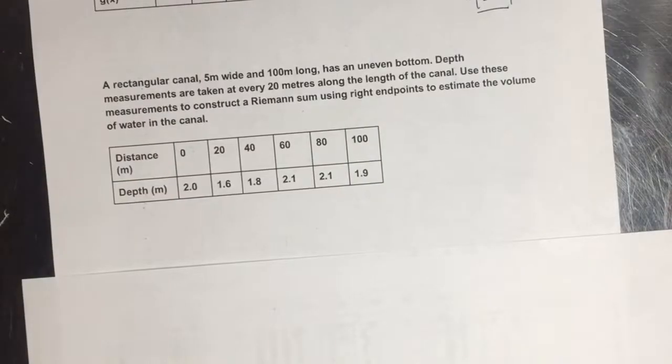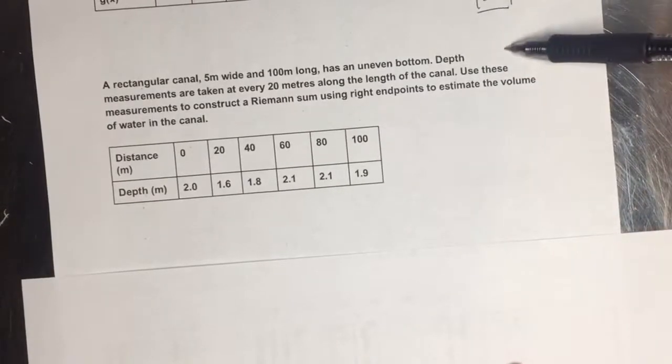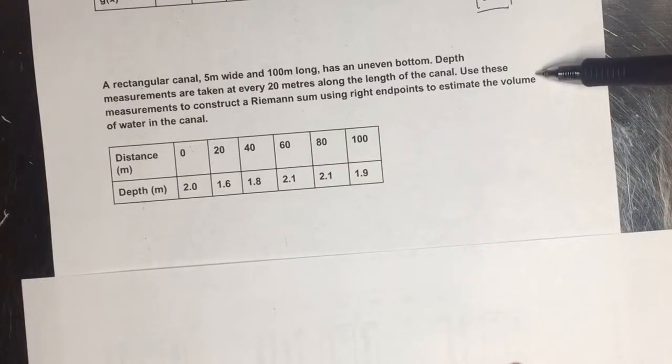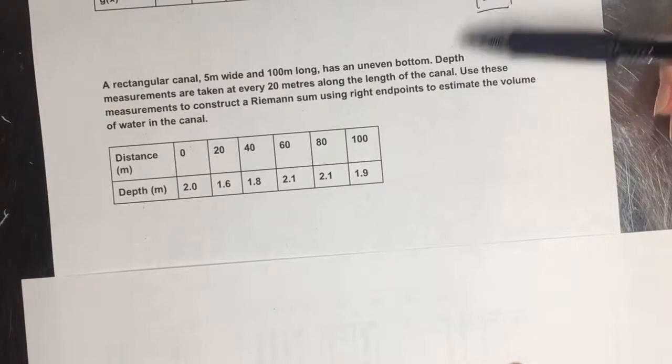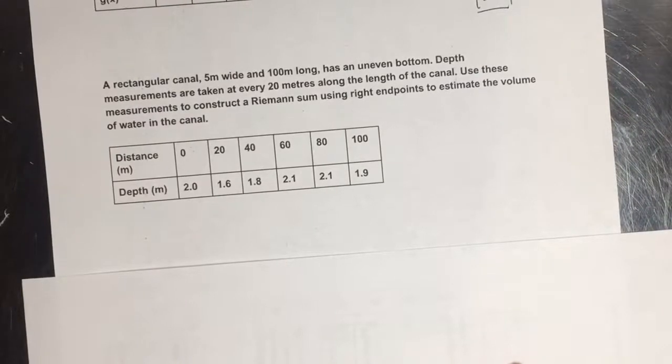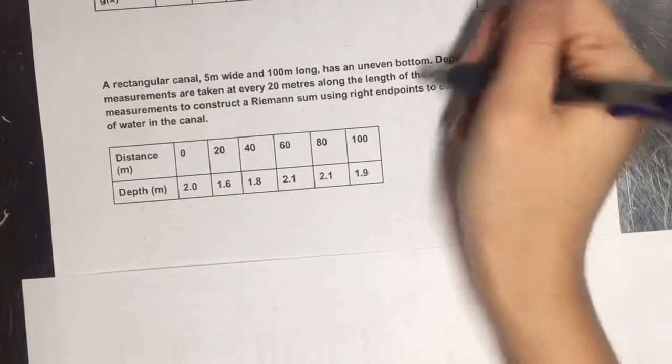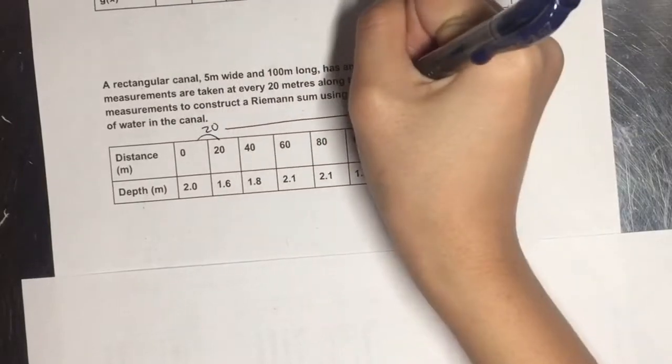A rectangular canal 5 meters wide and 100 meters long has an uneven bottom. Depth measurements are taken at every 20 meters along the length of the canal. Use these measurements to construct an RRAM to estimate the volume of water in the canal. So basically what they're asking you is just a standard RRAM with an interval of 20. When you calculate the base, it's actually just 20 the entire time through, which makes it easy for us.